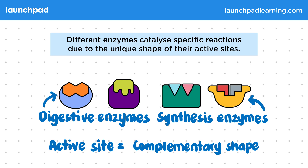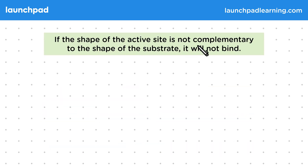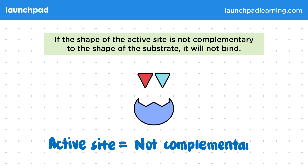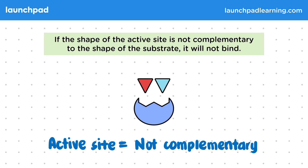So what happens if they're not complementary? If the shape of the active site is not complementary to the shape of the substrate, it will not bind. In this example, the active site is not complementary to the substrate. To use the lock and key analogy, this key does not fit the lock, so the enzyme won't attach to the substrate and the reaction will not work.